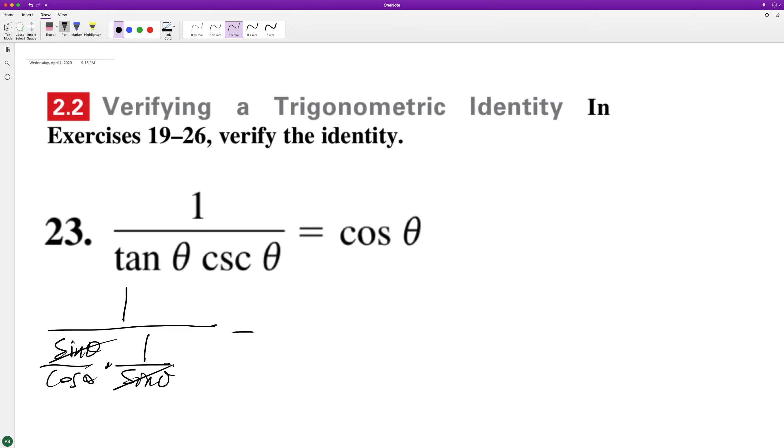So we're left with 1 over 1 over cosine theta. When you divide by a fraction, it's the same as multiplying by its reciprocal. 1 times cosine theta over 1, which is equal to cosine theta.